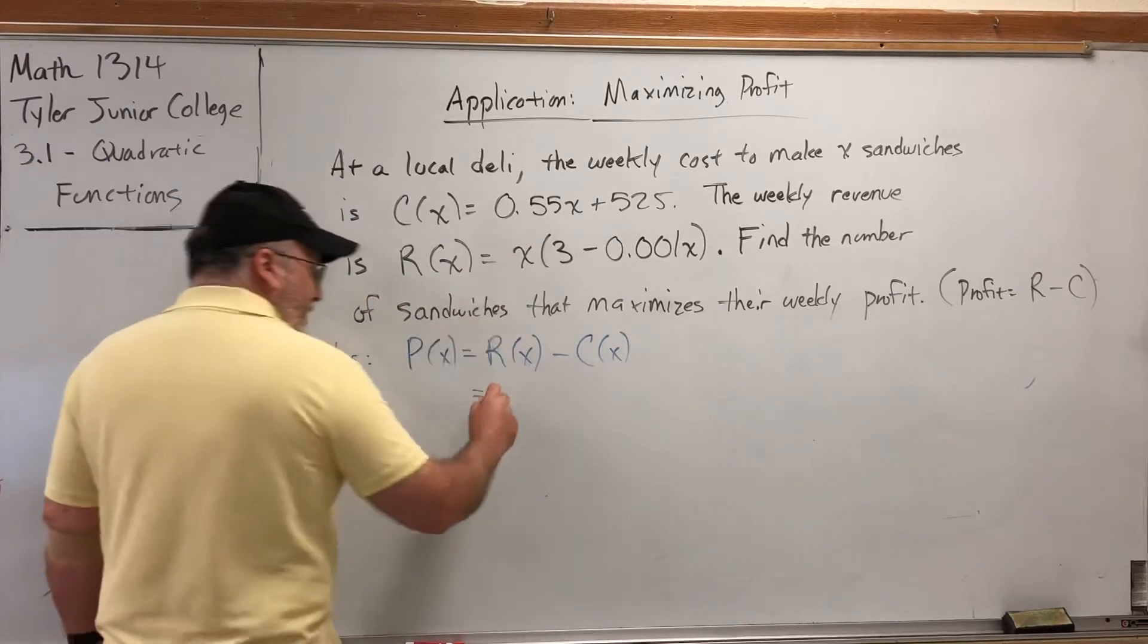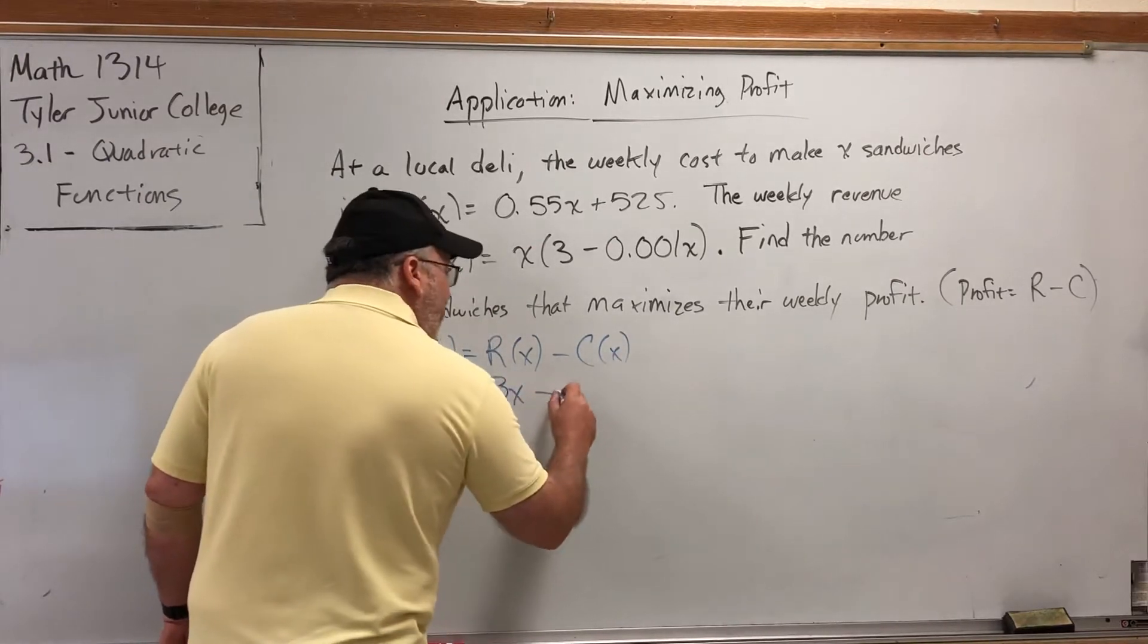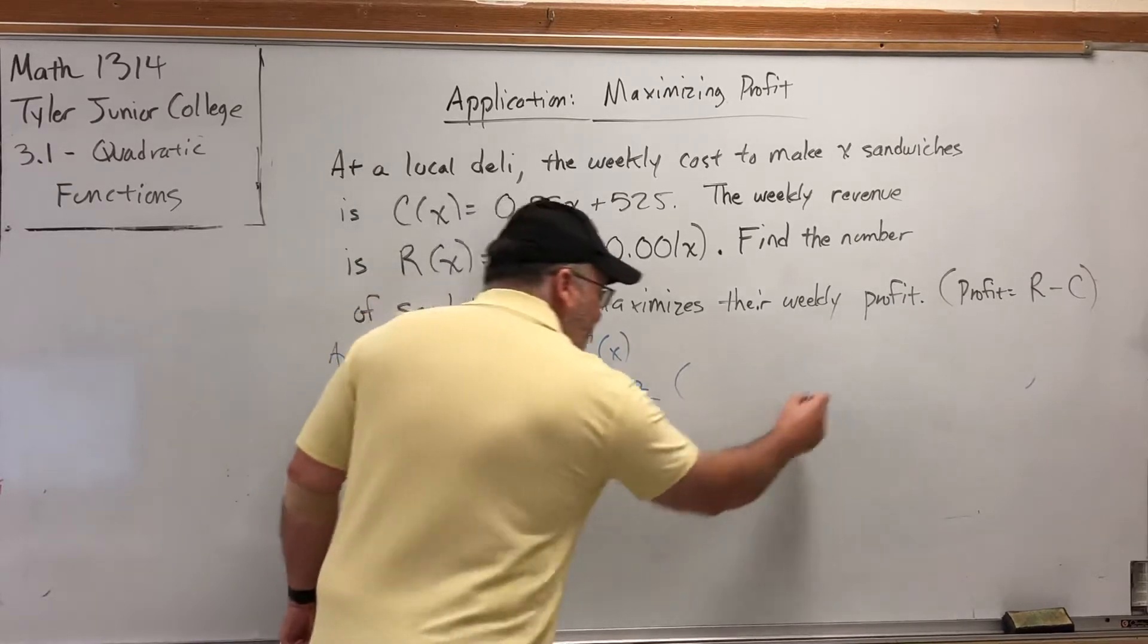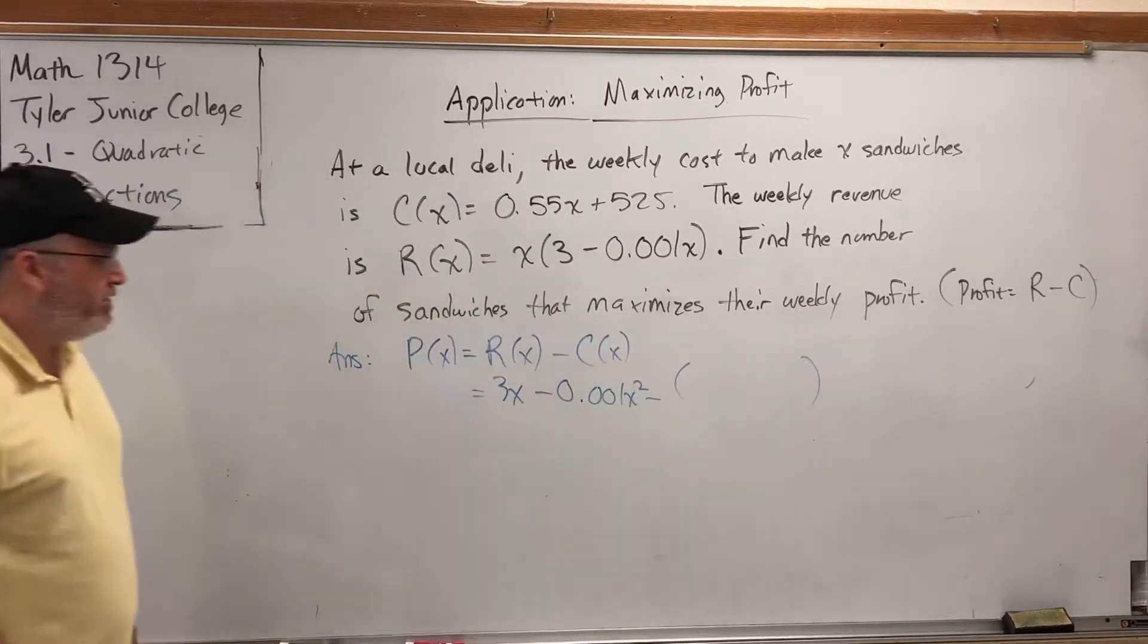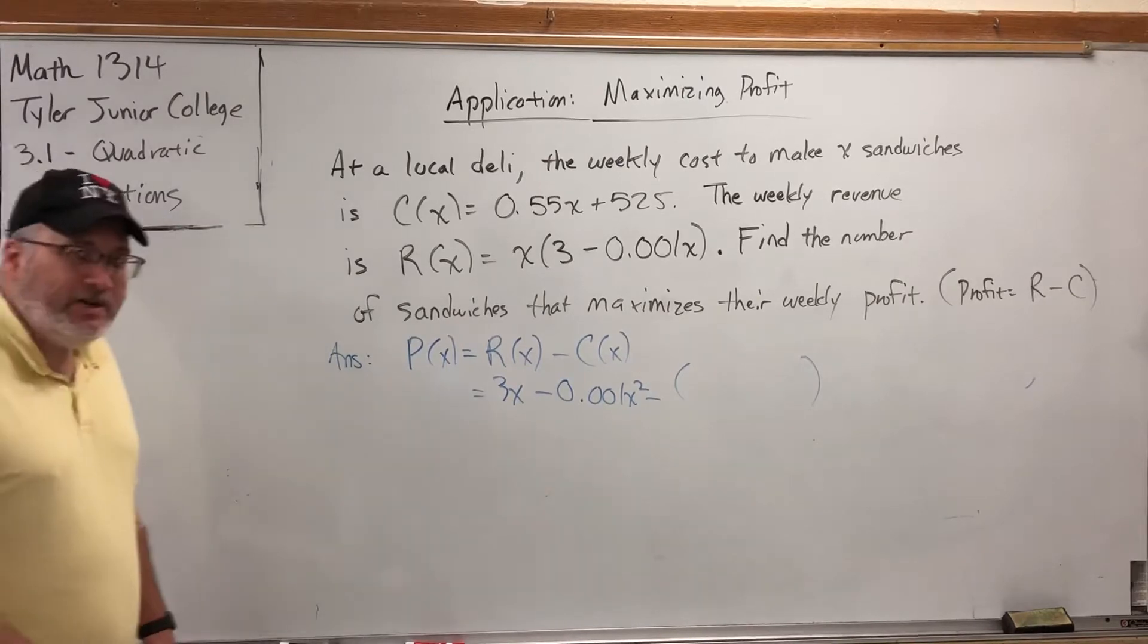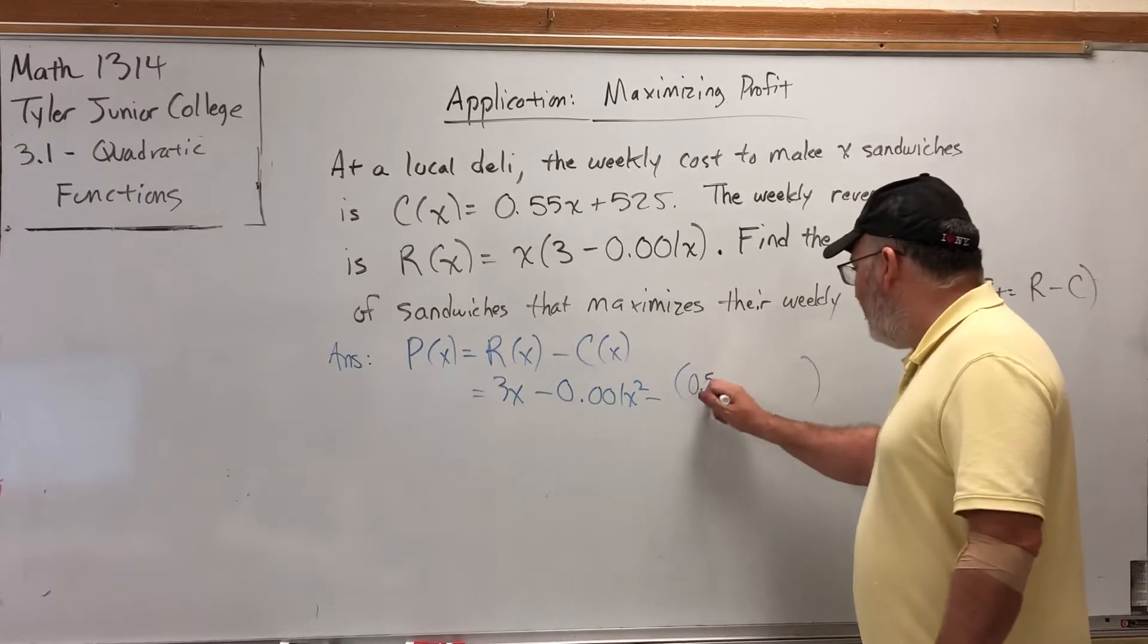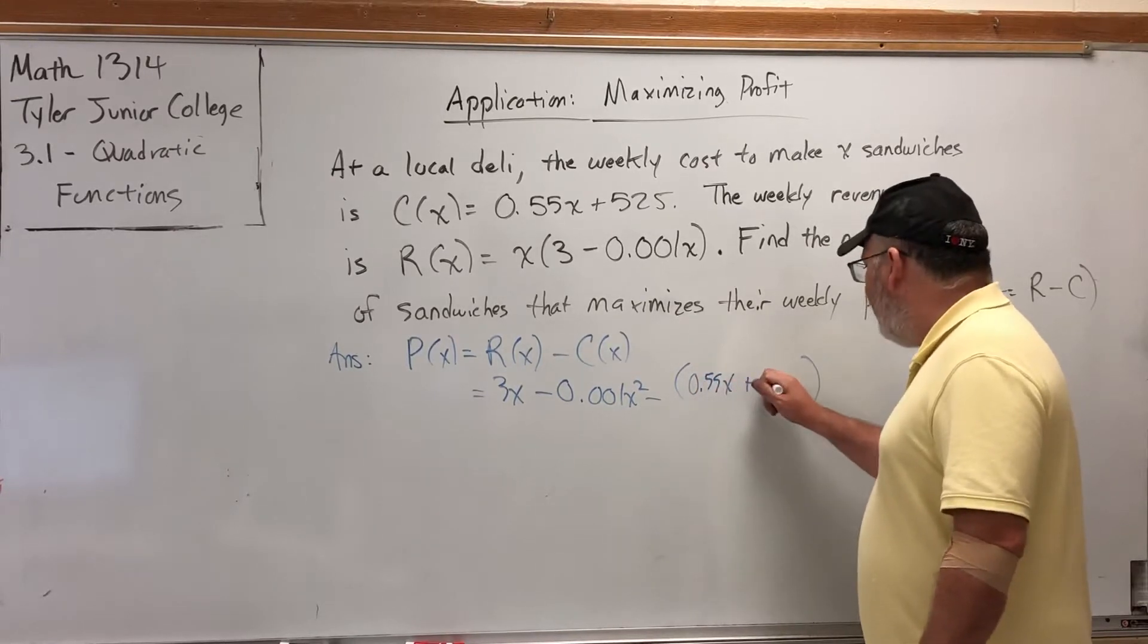The revenue, if we distribute the X, is 3X minus 0.001X squared minus the cost function. But since the cost function is a binomial, we need to put it in parentheses before we subtract it. So minus 0.55X plus 525.